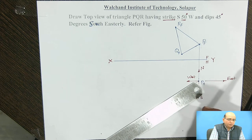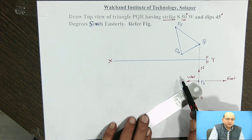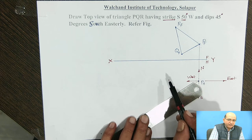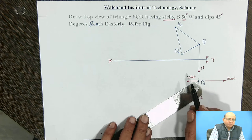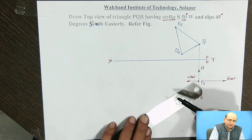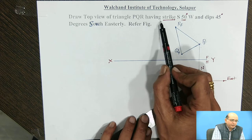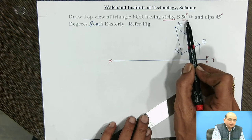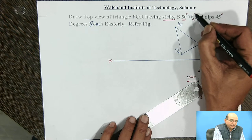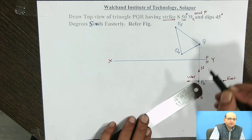The first step is to complete the strike line in the top view. The strike line is the true length line from the plane which is a horizontal line — the line which is parallel to the ground plane or parallel to HRP. That line will show the true length in the top view and is called the strike line of the plane. The strike of the plane is given as south 50 degrees west and the point given is P, so this strike is with respect to the P corner of the plane PQR.